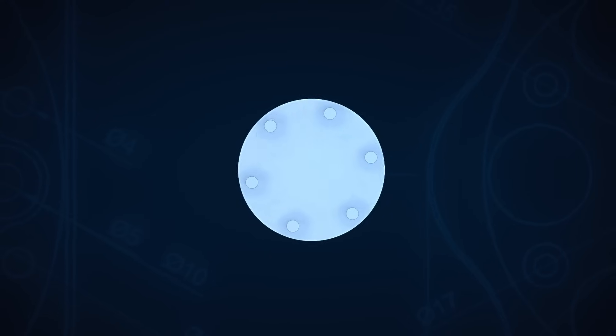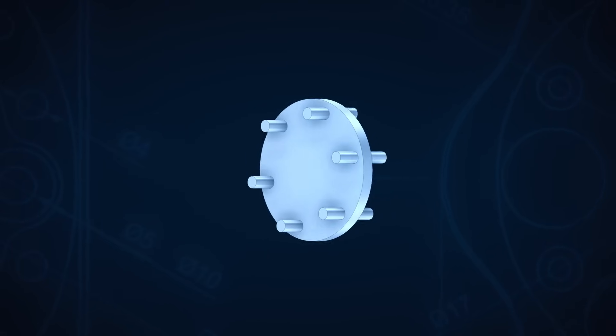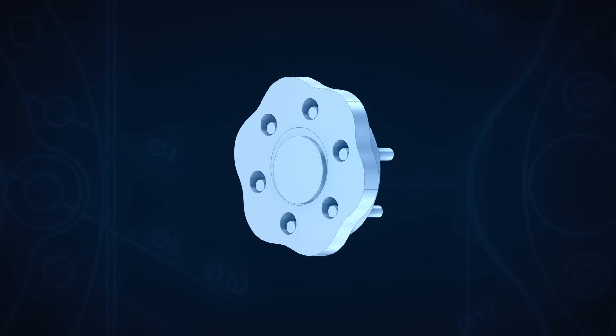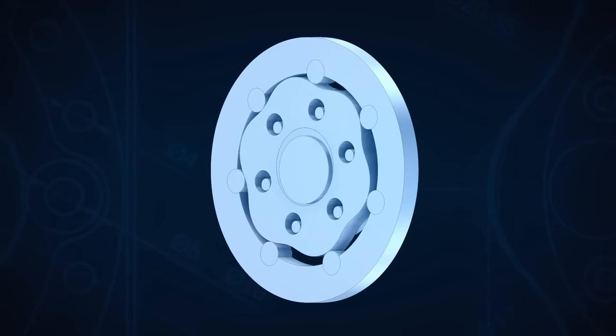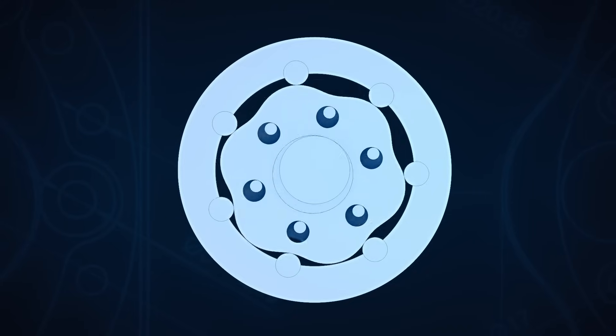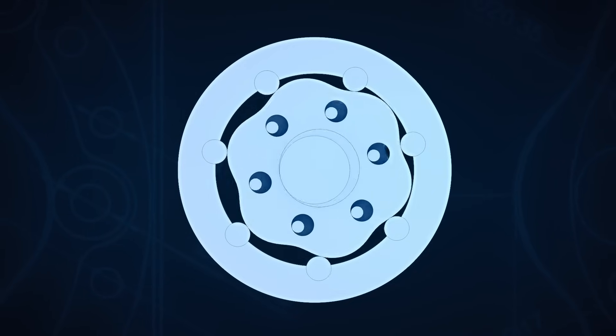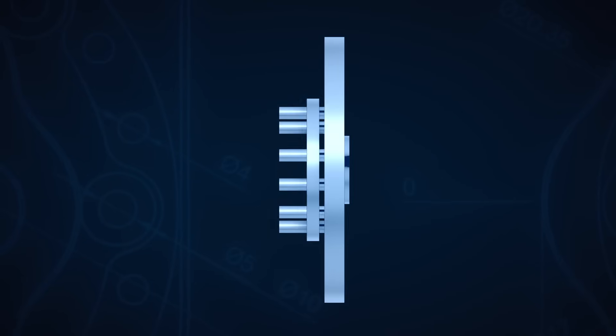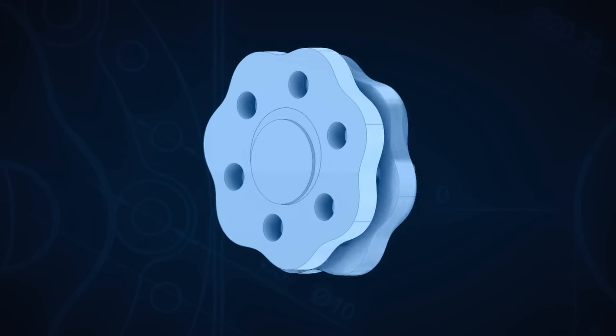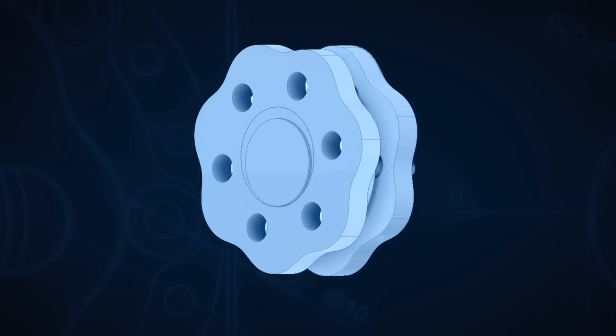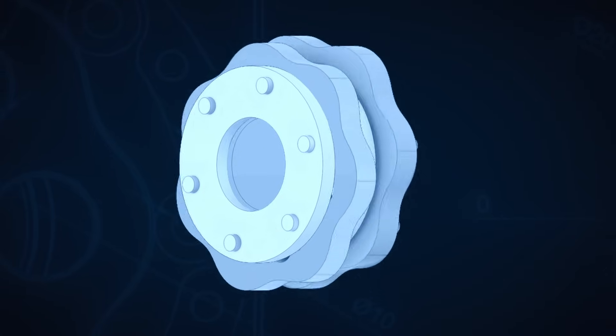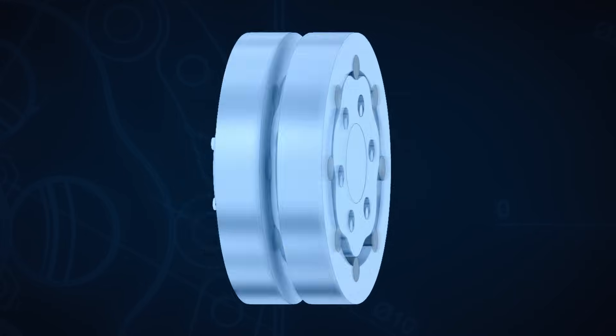Even more interesting is what happens when we don't lock down that inner ring, but instead rotate it in the opposite direction at a ratio of 7 to 1. Well, now suddenly that outer ring is spinning at a ratio of 49 to 1. Wait, what? That's the same output as the two-stage design we originally looked at. And why are we spinning that inner ring at a 7 to 1 ratio?